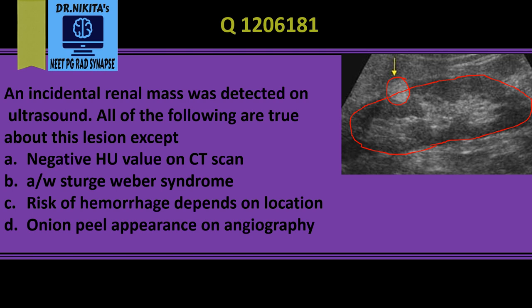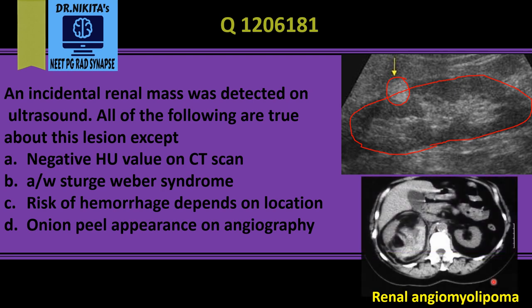The most common fat-containing lesion in the kidney is an angiomyolipoma. The angiomyolipoma will have blood vessels (angio), muscles (myo), and fat (lipoma). If we do a CT scan to further evaluate this mass...